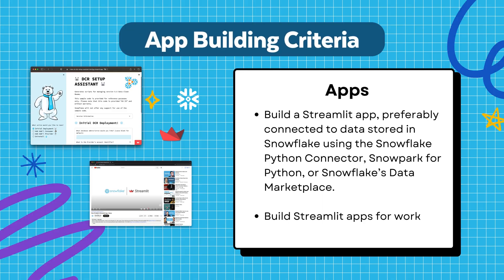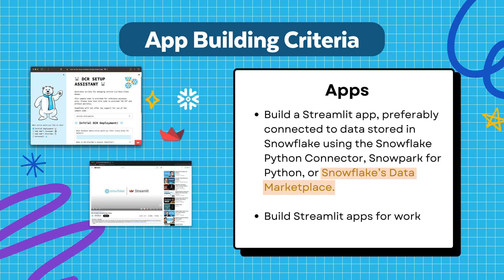But what do you need to do to qualify? To participate in the hackathon, you'll need to build a Streamlit app, preferably connecting to data stored in Snowflake using the Snowflake Python connector, Snowpark for Python, or Snowflake's data marketplace. Or you could also build Streamlit apps that you would use for work.